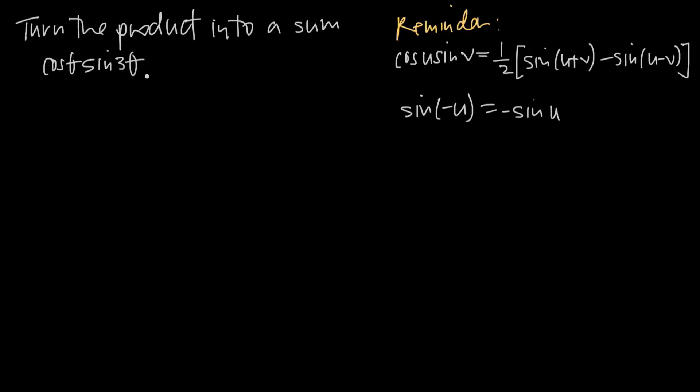So we've been given this value, cosine of theta times sine of 3 theta. Obviously that's a product because we have cosine of theta multiplied by sine of 3 theta.